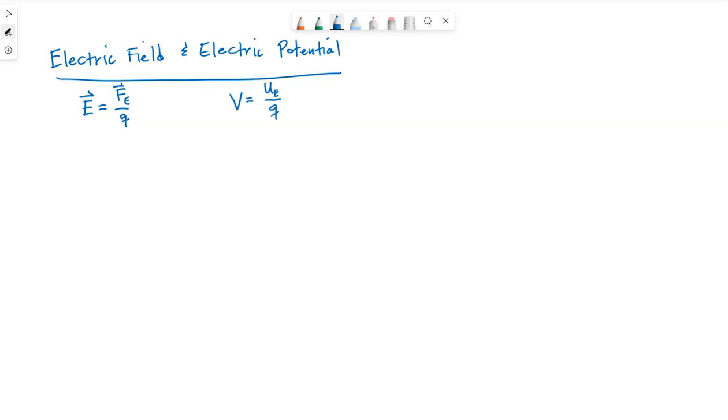So both E and V are related to the charge that's creating the electric field, not the one that's going to feel the force or have the energy. But it turns out that these two, electric field and electric potential, always go hand in hand. That's the relationship I want to show you.